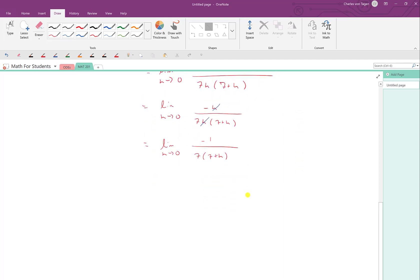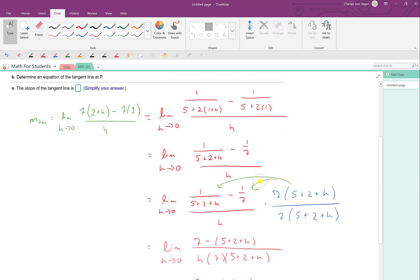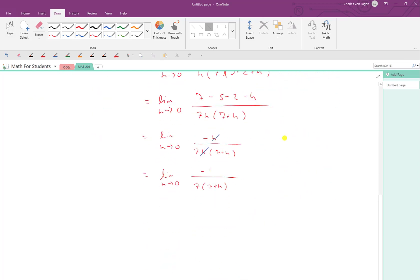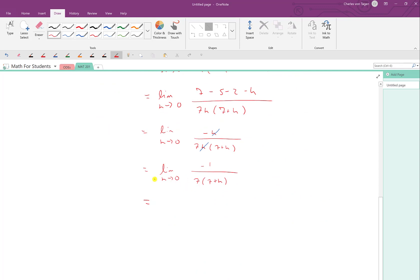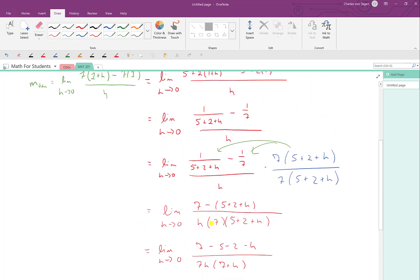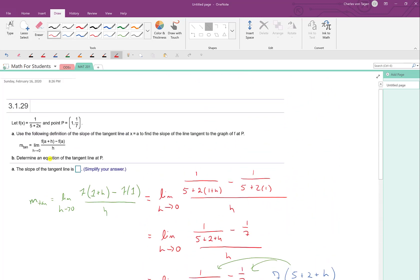So now I'm left with the limit as h approaches 0 of negative 1 over 7 times 7 plus h. And now the factor, this factor of h right here, which way back at the very beginning was the factor that was preventing me from doing direct substitution, has been canceled out. And now we can evaluate the limit through the direct substitution property. So I plug in a 0 everywhere I see an h, and we end up with minus 1 over 49. And that gives, for this particular problem, that gives the slope of the tangent line. We just found that the slope of the tangent line is minus 1 over 49.